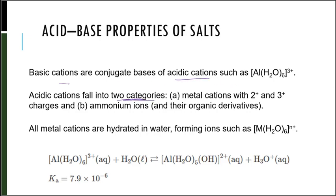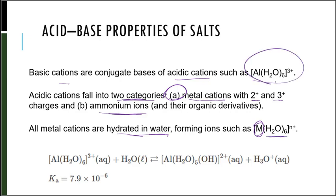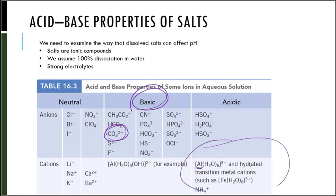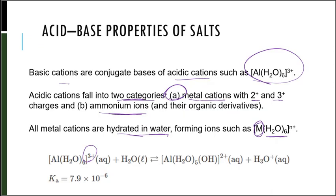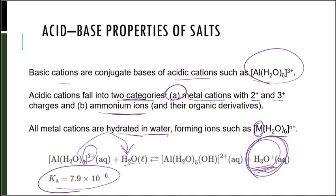Basic cations are the conjugate bases of acidic cations. Acidic cations fall into two categories: metal cations with a +2 or +3 charge, and ammonium ions and their organic derivatives. All metal cations are hydrated in water. The table shows aluminum and hydrated transition metals such as iron, and ammonium — all making the solution more acidic. My hydrated aluminum cation in water acts acidic, donating a proton to water, giving me H3O⁺, and we can find a Ka value for it.